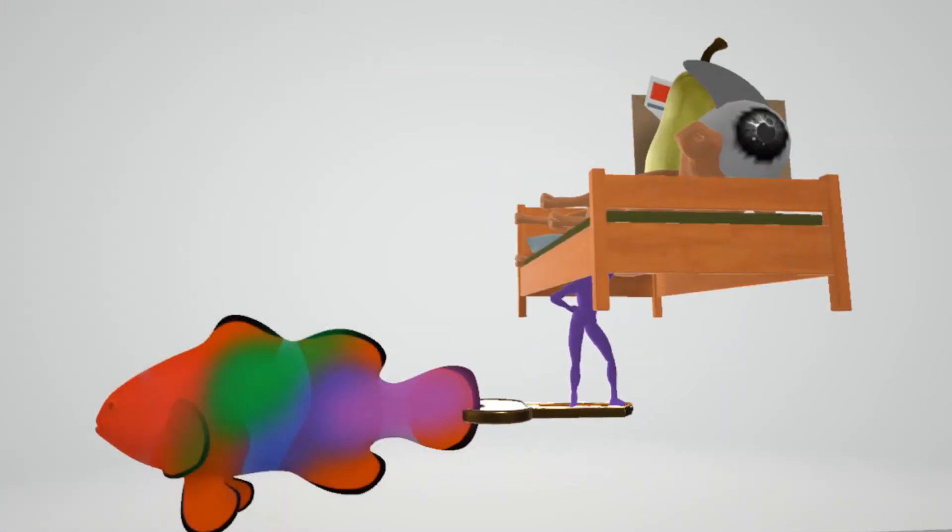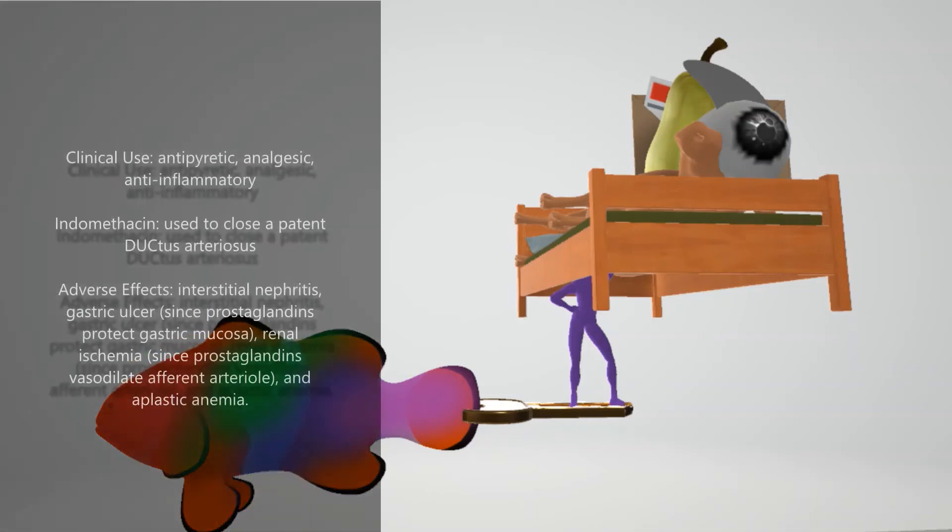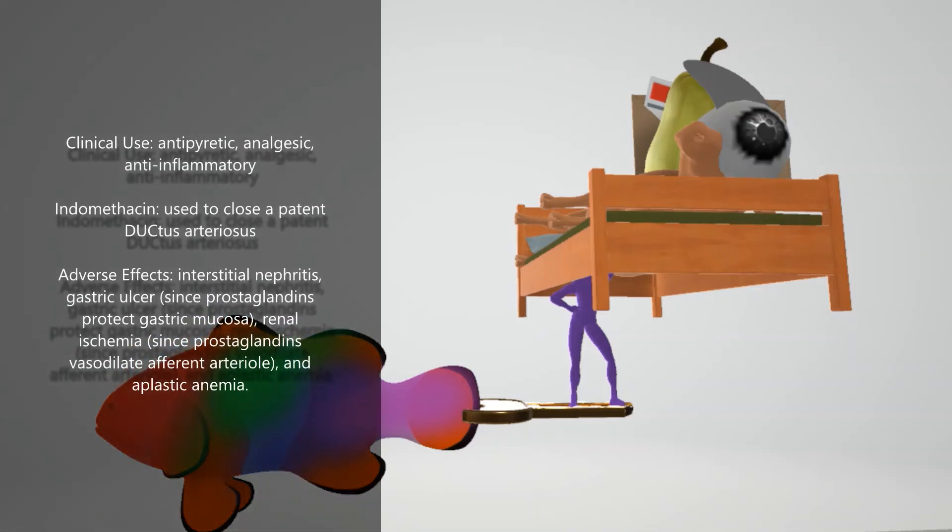As we mentioned, these NSAIDs reversibly inhibit COX-1 and COX-2, blocking prostaglandin synthesis. And by doing so, they are antipyretic, analgesic, as well as anti-inflammatory.